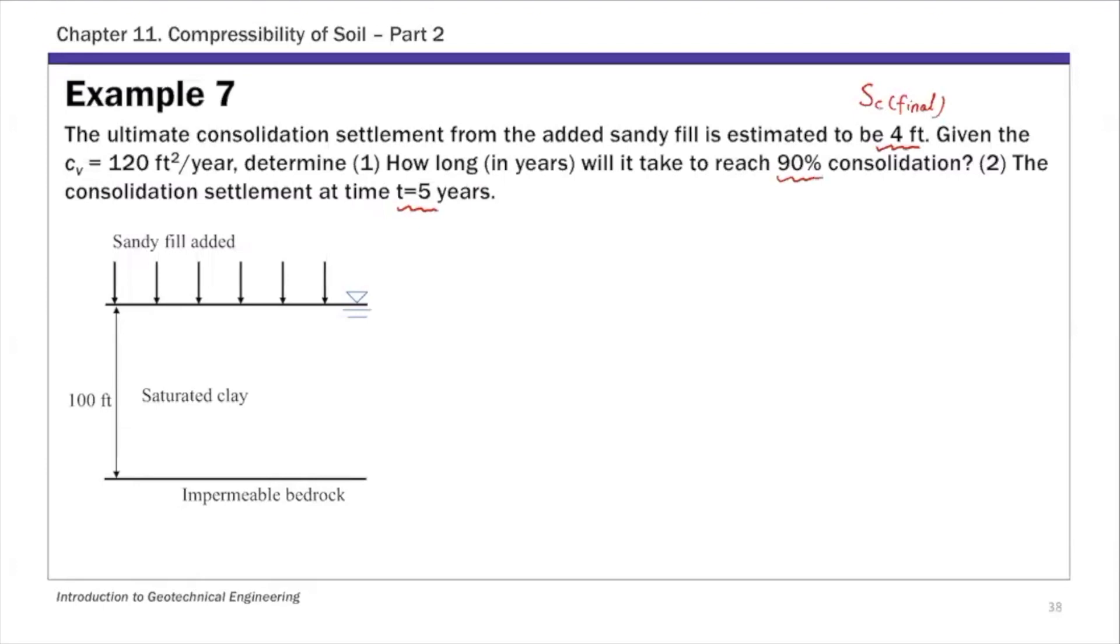The soil profile layout is given in this figure. We have our consolidating layer, the saturated clay layer, which is 100 feet thick. In rate of consolidation calculations, a key piece of information you need to determine is the HDR.